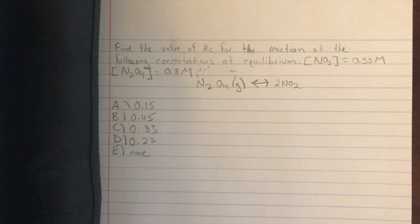Find the value of Kc for the reaction at the following concentrations at equilibrium: nitrogen dioxide at 0.35 molarity and dinitrogen tetroxide at 0.8 molarity for the reaction.